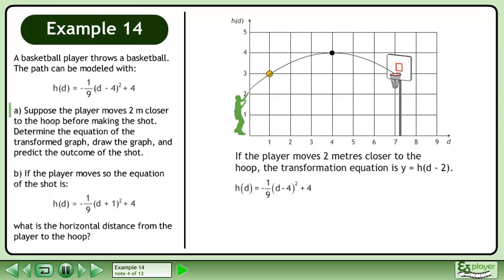Rewrite the function h(d) = -1/9(d - 4)² + 4. If the graph is transformed 2 units right, plug in d - 2 as the input of the function.